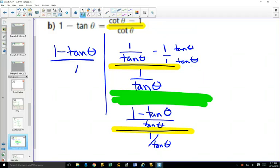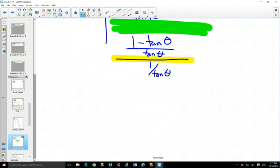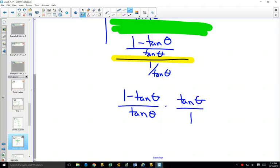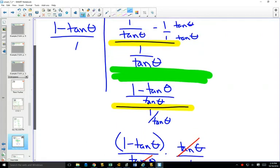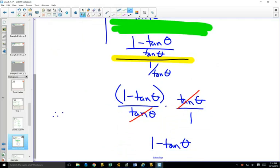Now we have a single fraction on the top and a single fraction on the bottom. And a fraction divided by a fraction can multiply by the reciprocal. So I will have 1 minus tan theta over tan theta multiplied by the reciprocal tan theta over 1. So this gets grouped together as one term. Do we have anything that's the same? Sure enough, those are the same. So they can simplify. And we're left with 1 minus tan theta. Is that identical to what we had to begin with? It is. So the left side is equal to the right side.